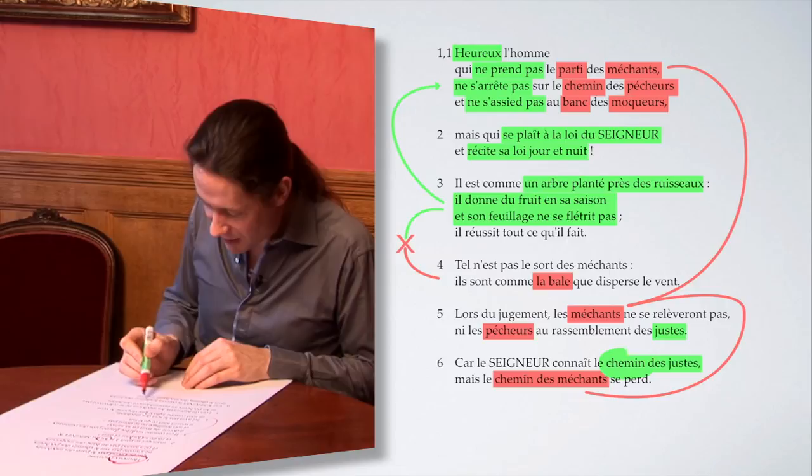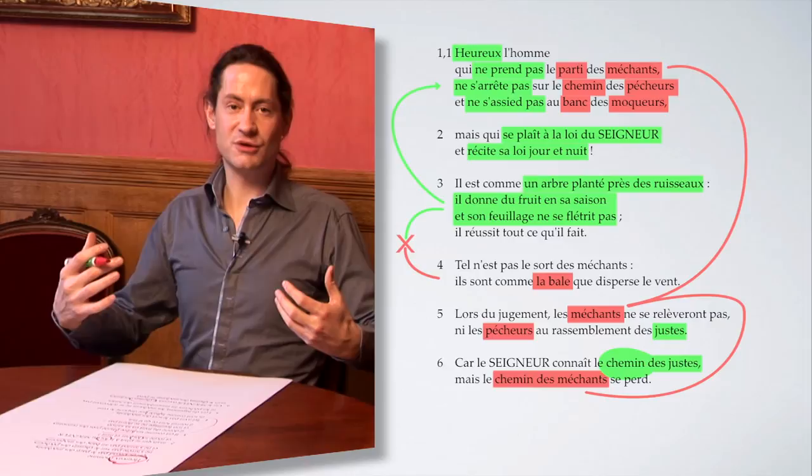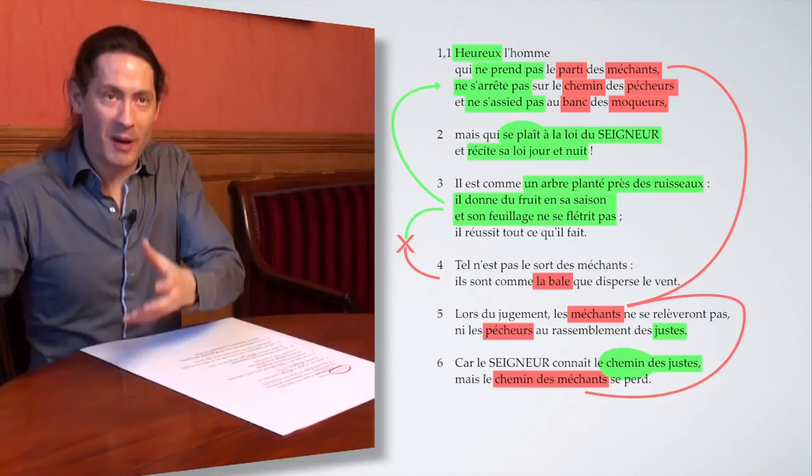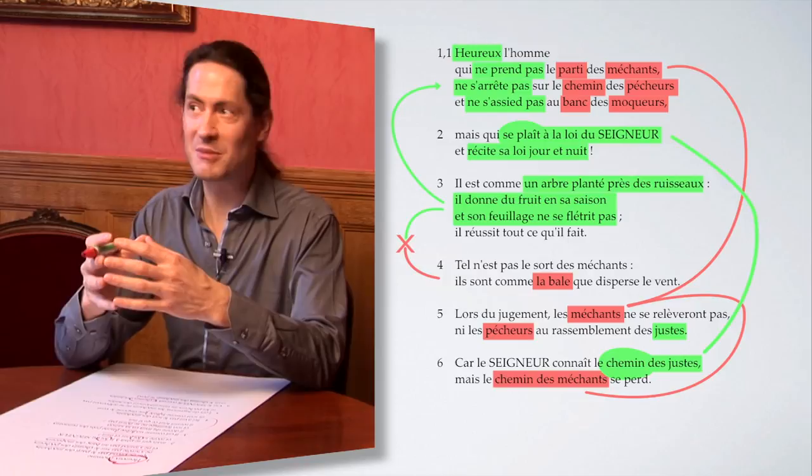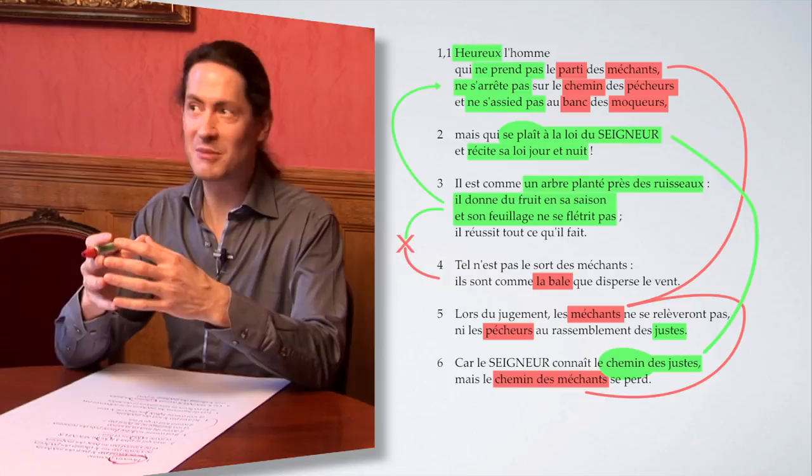Le lecteur peut à présent poursuivre son chemin à travers les psaumes pour y découvrir la voie des justes et le plaisir de l'enseignement de Dieu. Ces deux éléments, emprunter la voie de la justice et prendre plaisir à l'écoute de Dieu, sont les deux faces d'une même clé, celle du bonheur.